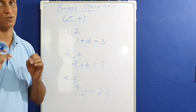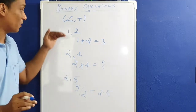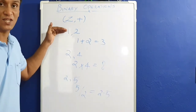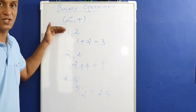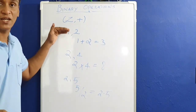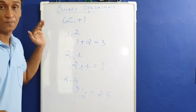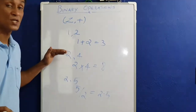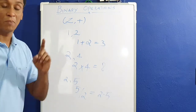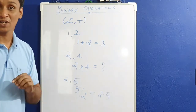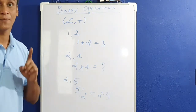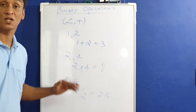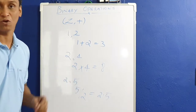So at this point, on the set of integers, addition is a binary operation and multiplication is a binary operation, but division on the set of integers is not a binary operation.